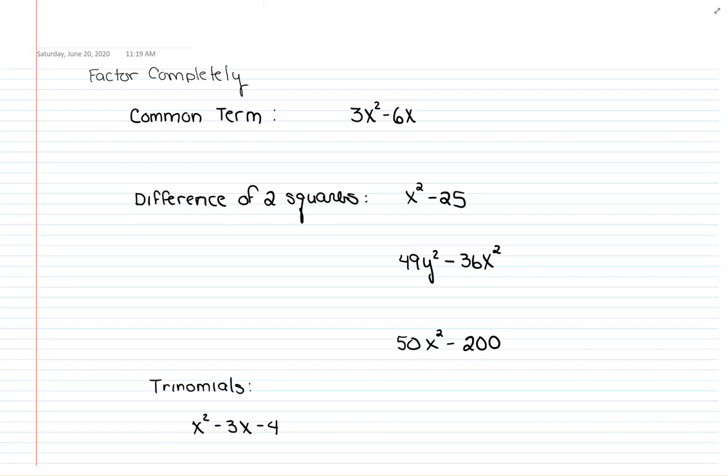The first type is the common term. With common term, and this is usually the very first type of factoring that you would try to do anyway, you're looking to see what number or variable will divide into both or all of the terms in your expression.